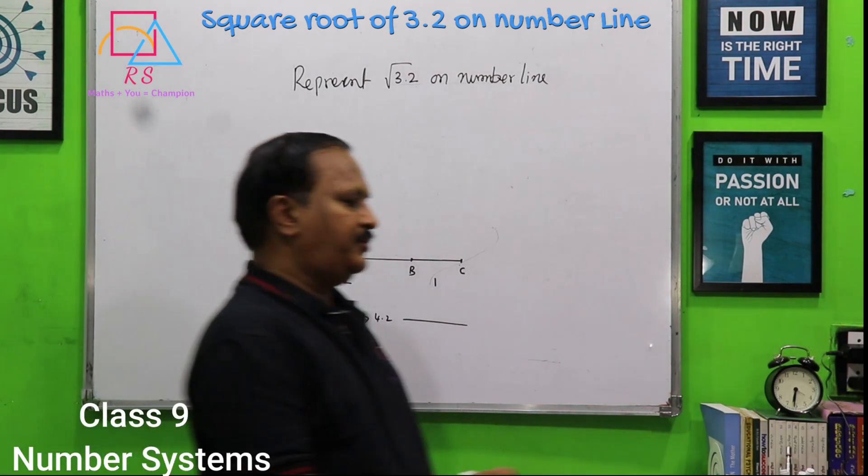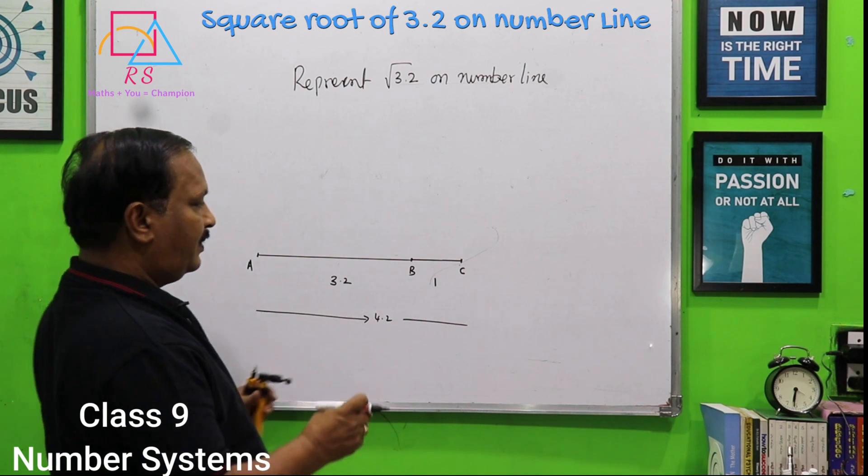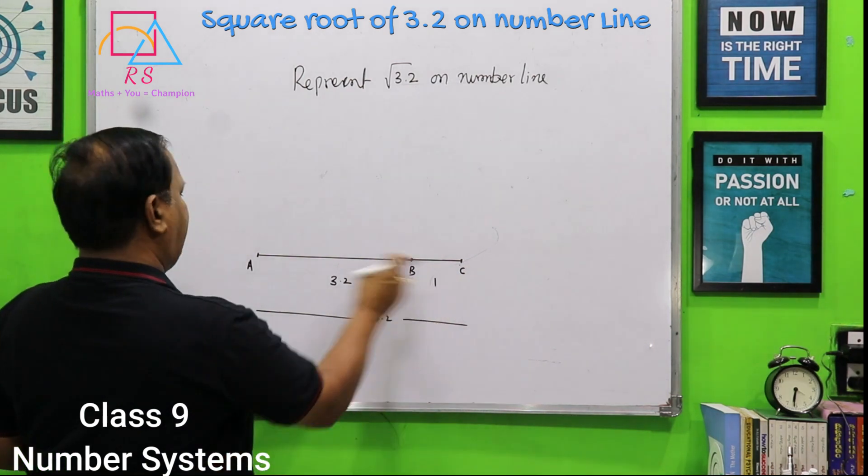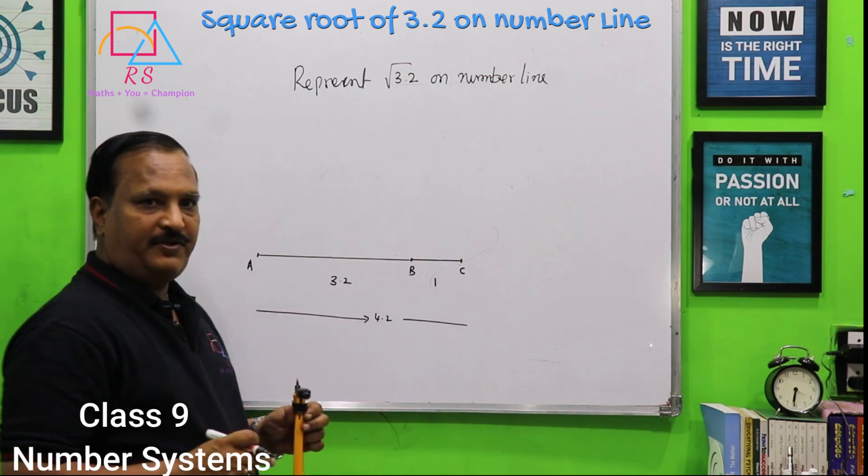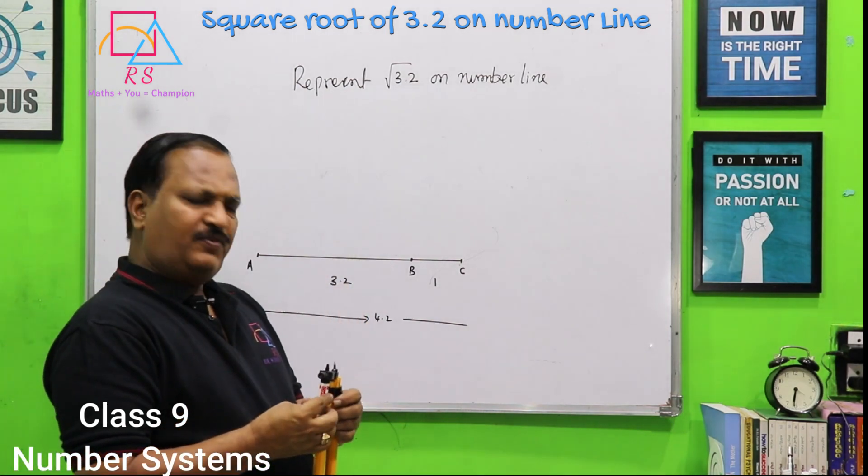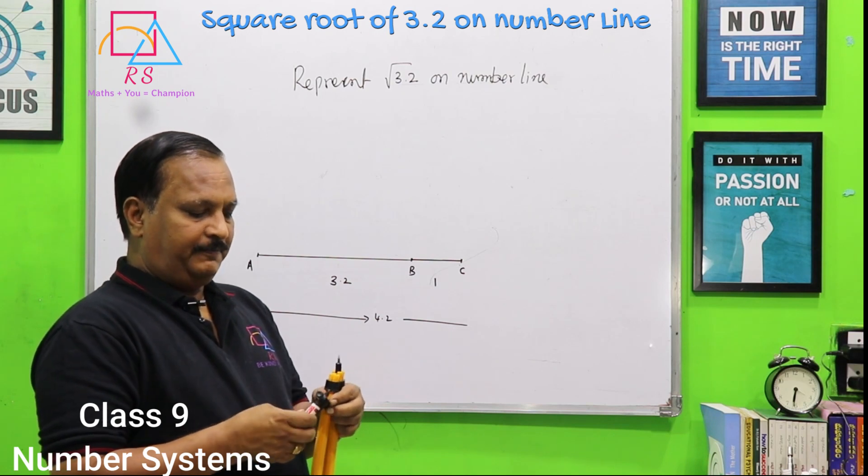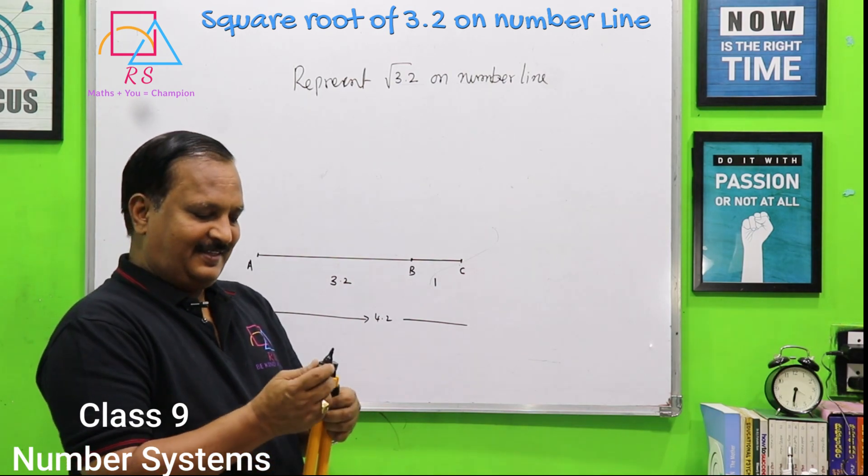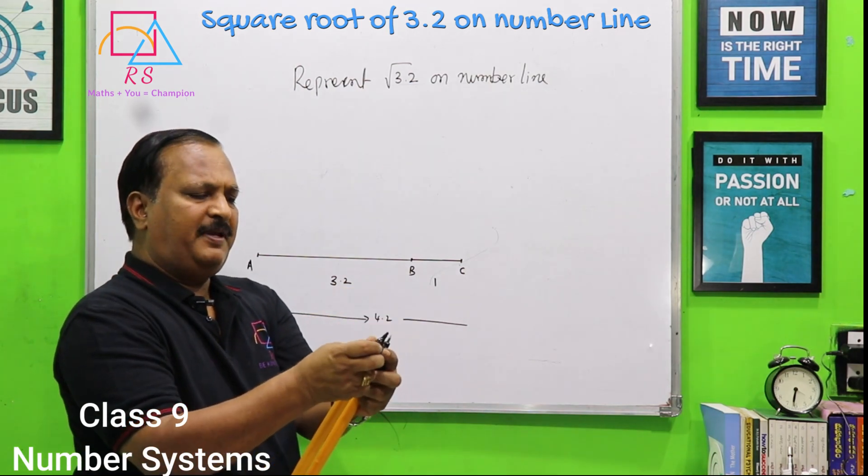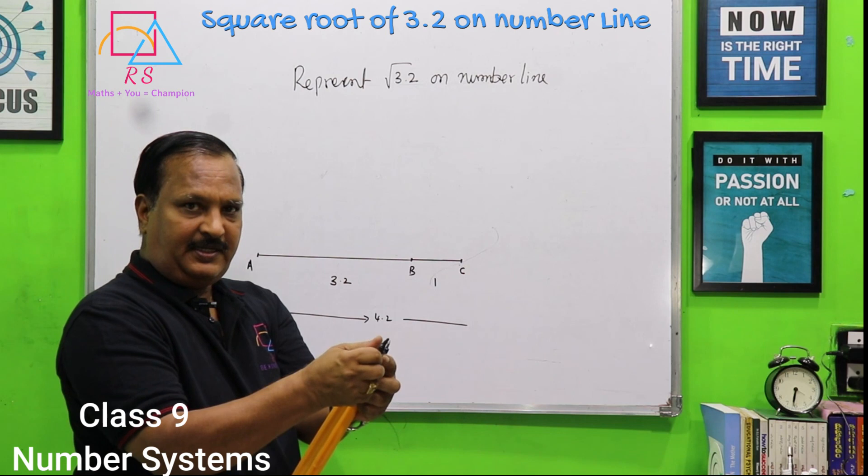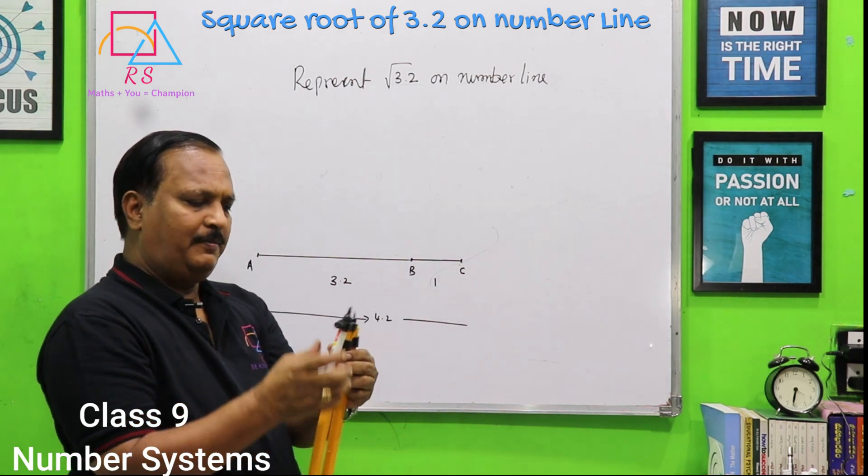So, now you have to take a compass. Take a compass and draw a perpendicular bisector of AC. That means, you have to find out a midpoint of AC.